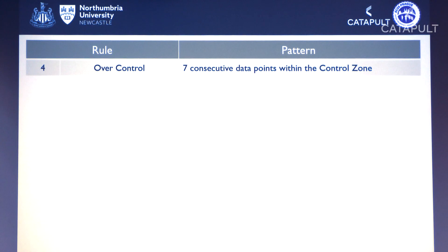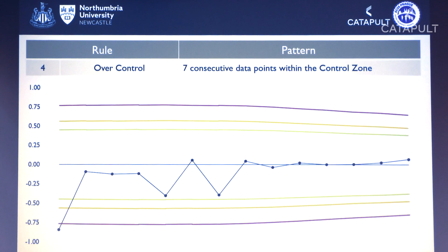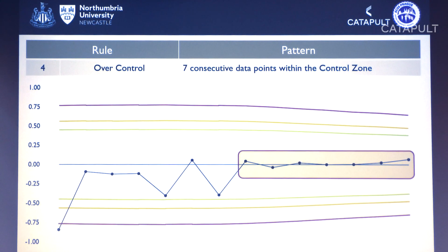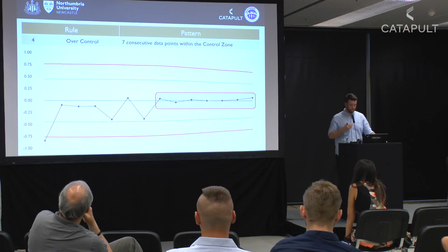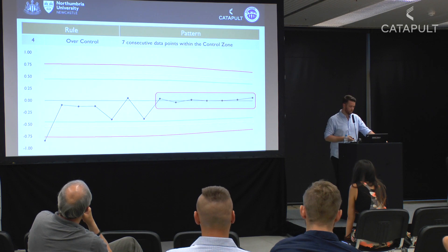Rule 4: seven consecutive data points within the control zone — what we call 'over control.' If a player's training load isn't changing at all over a seven-day period, we want to address that. We want overloading and under-loading on a daily basis, not flat-lining.